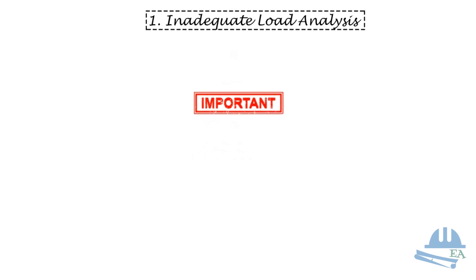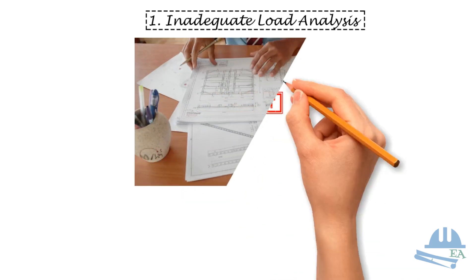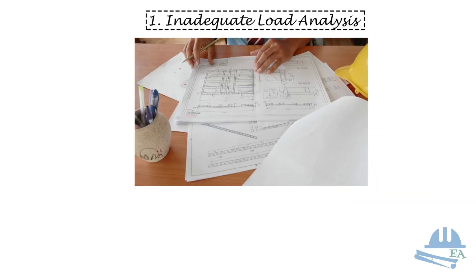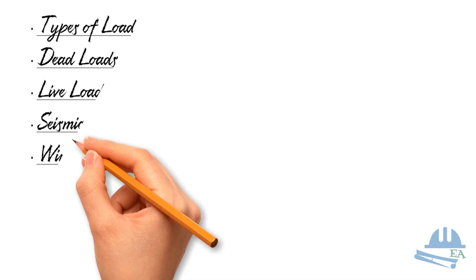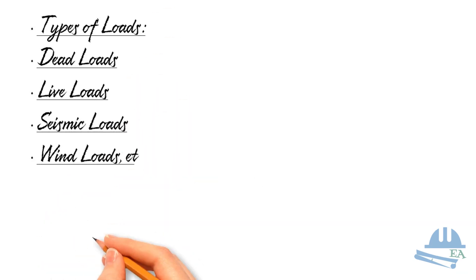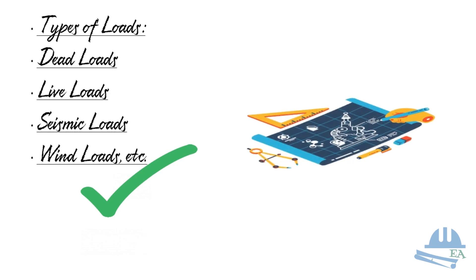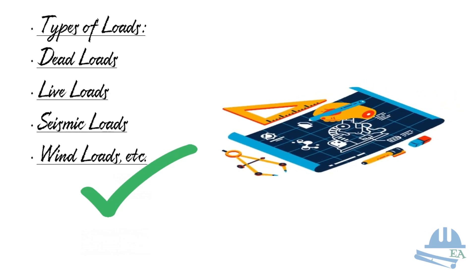Number one, inadequate load analysis. Let's start with the first common but big mistake, inadequate load analysis. This is super important because it's all about figuring out the various loads a structure will face during its lifetime. These are mainly dead loads, live loads, wind loads, and seismic loads. If you do not get this right, your design could either be unsafe or inefficient.